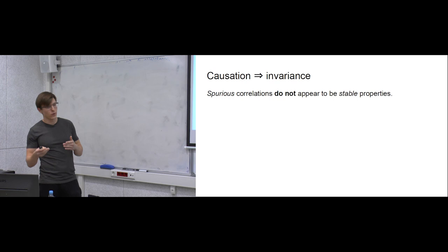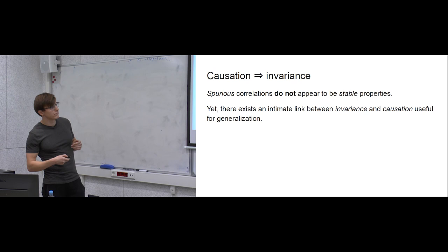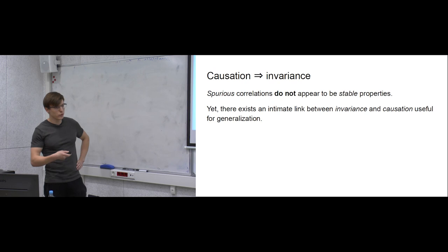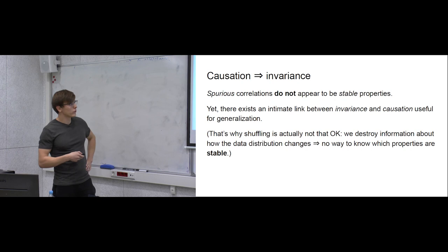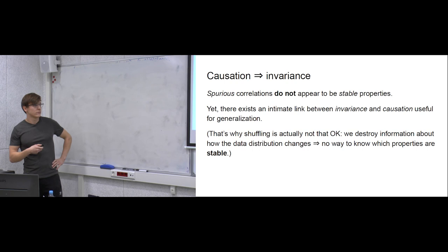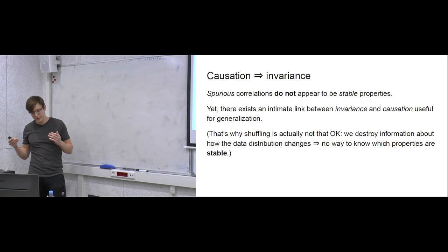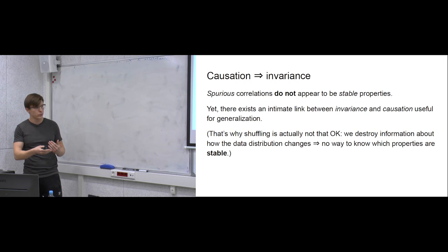We can notice that spurious correlations are not stable — they tend to vary from dataset to dataset or from environment to environment — whereas true causal features are invariant: stable and present in all environments. We can use this to build predictors that generalize well to new testing environments. The authors also note that shuffling data, which we commonly do in training, is problematic because it destroys information about how the data distribution changes from dataset to dataset.